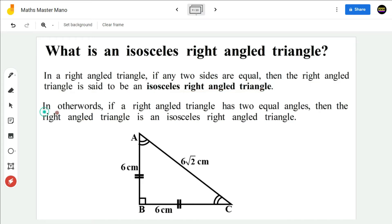In other words, if a right-angled triangle has two equal angles, then the right-angled triangle is an isosceles right-angled triangle.